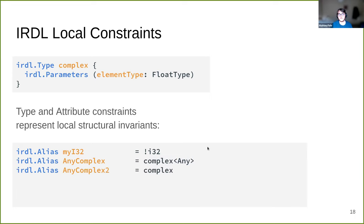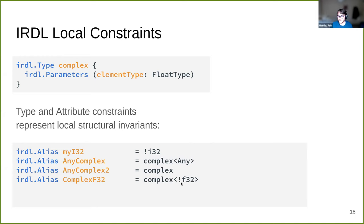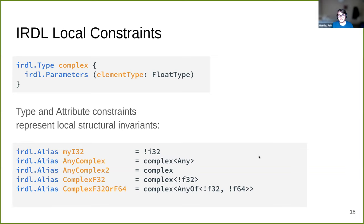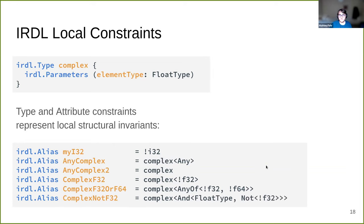We also have shorthands: instead of writing all parameters with any, we can just give no parameters. Or we can give more specific constraints — for instance, a complex number that has f32 as parameter, which is also a kind of equality constraint. We can also use constructs like any_of, which checks it's a complex of either f32 or f64. And we can use and and not to express more complex combinations — for instance, a complex number that is both a floating-point type and not an f32.